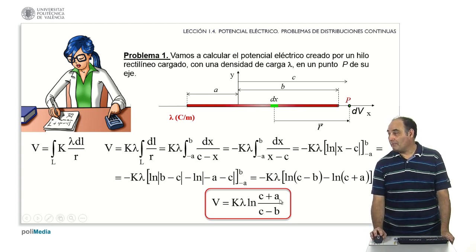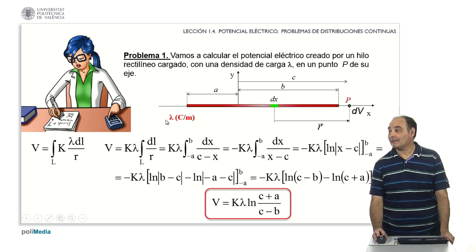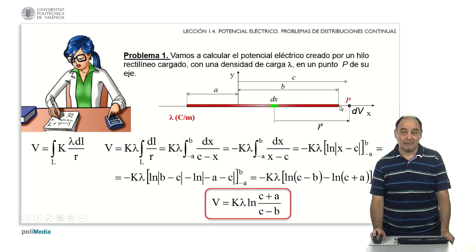Specifically notice that c plus a is neither more nor less than the distance from p to the far end of the bar. In the same way, c minus b is the distance from point p to the nearest end of the bar. So it just depends on the bar and point p.